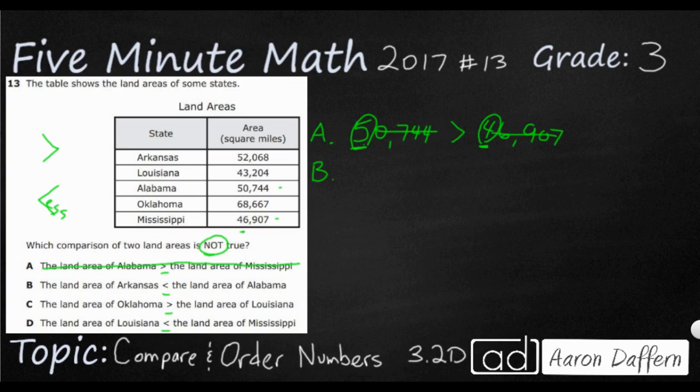B. The land area of Arkansas, so that's 52,068 is less than the land area of Alabama, that's 50,744.